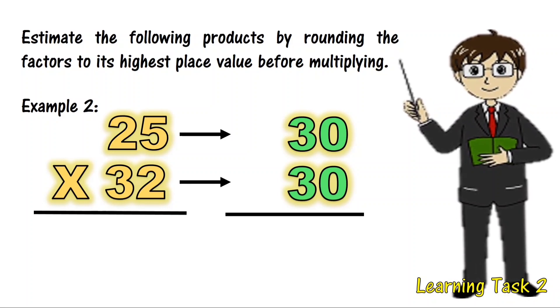25 is rounded up to 30, and 32 is rounded down to 30. Multiply the whole number and write the number of zeros in both factors.